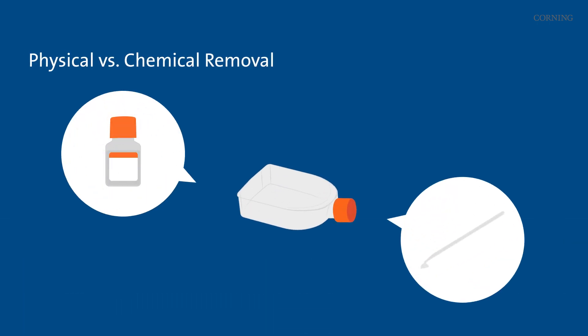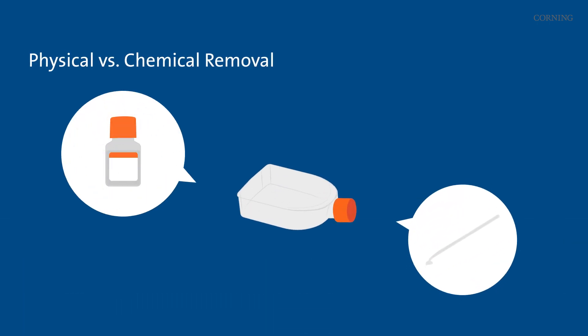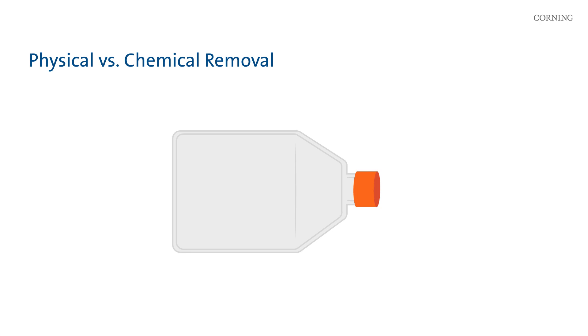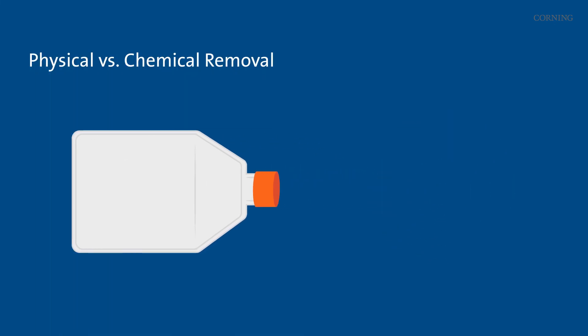Choose your method wisely. Physical removal via cell scrapers can be a good option for strongly adherent cells or to prevent receptor damage from enzymes. Use of dissociation reagents should be optimized for your cell type and application.